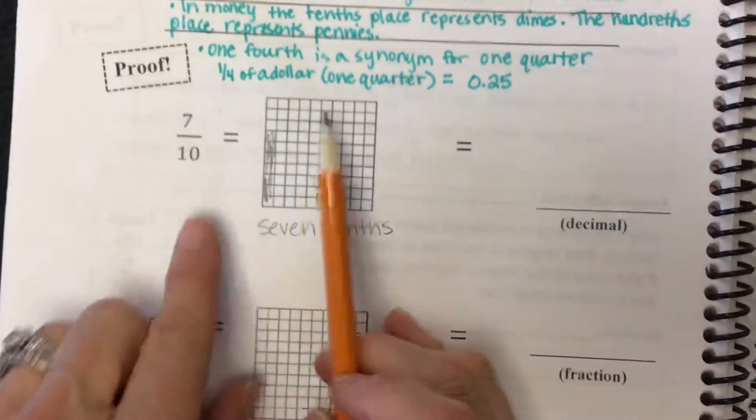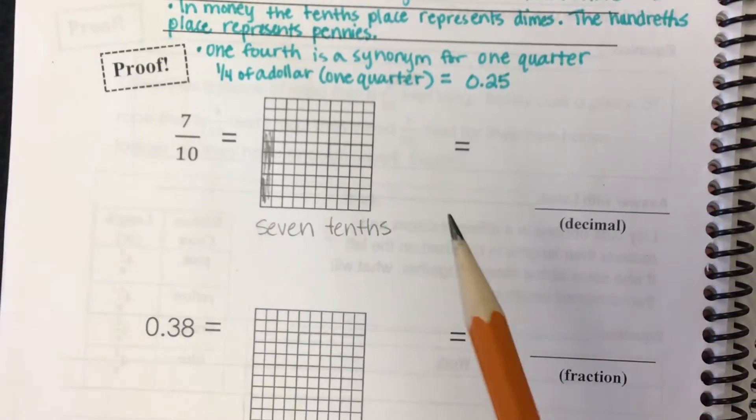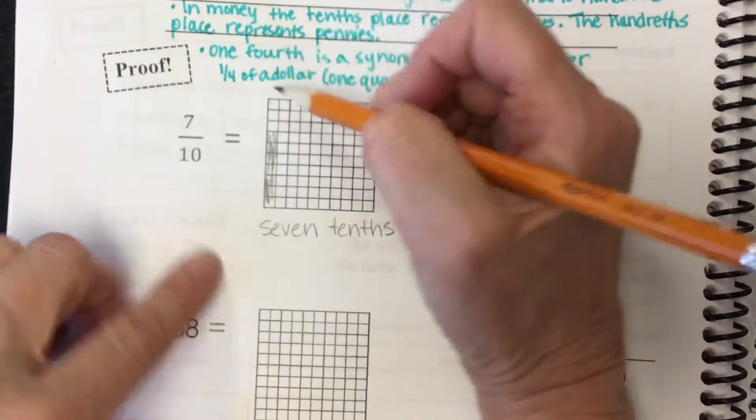Okay? Now, it is divided into 100 equal parts. Guys, you got to stay with me. But these are columns and there are 10 columns. Look.